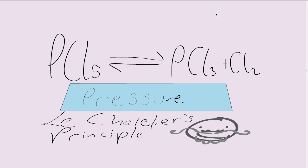An example of this is in this reaction here: PCl5 going to form PCl3 and Cl2, and vice versa, obviously.